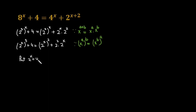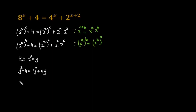Now I am going to put 2 raised to the power x equal to y. So replacing 2 raised to the power x with y, this equation becomes y raised to the power 3 plus 4 equals y raised to the power 2 plus 4y. In the next step I am going to shift all terms to one side.